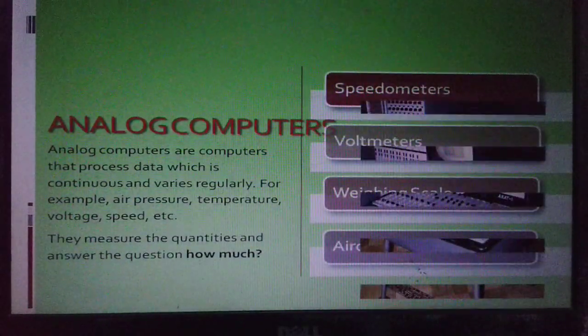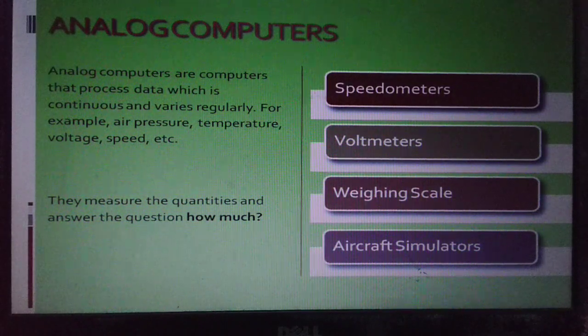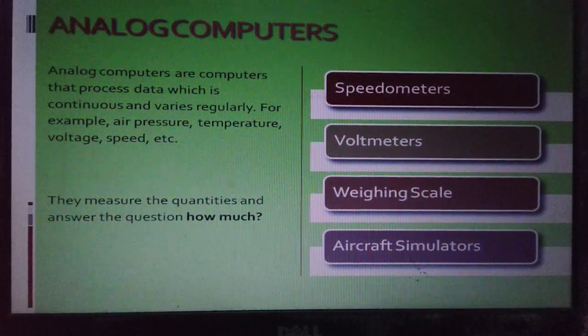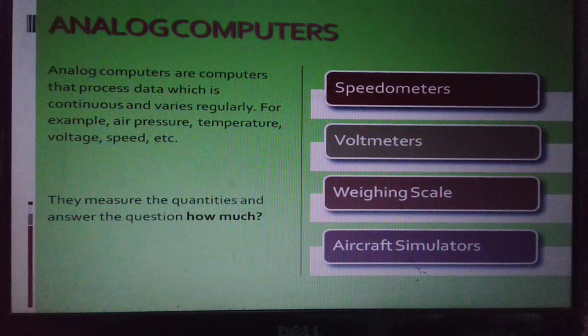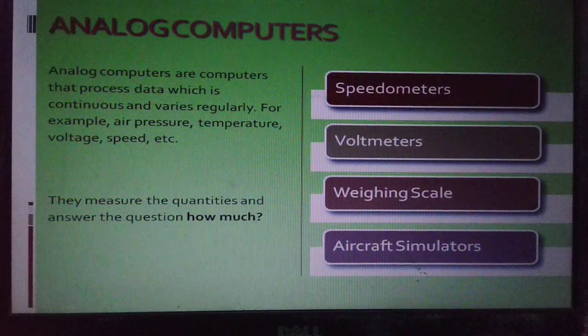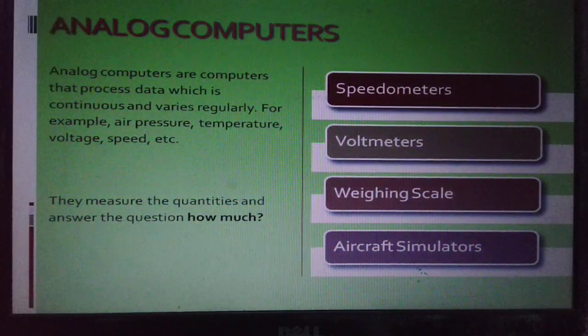Analog Computers. These computers process data which is continuous and varies regularly. For example, they work on values of air pressure, temperature, voltage, speed, etc.